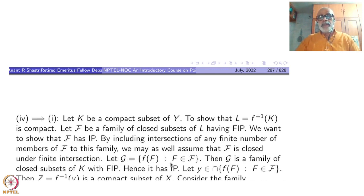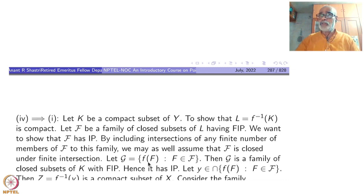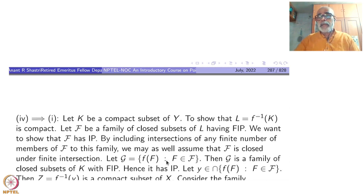Let curly-G be all the images of members of F under f. These are now inside Y. Then G is a family of closed subsets of K — because f is a closed map, they are closed subsets of K. They have the finite intersection property: for F1, F2, ... with non-empty intersection, f of those will sit inside f(F1), f(F2), f(F3), so their intersection is again non-empty.